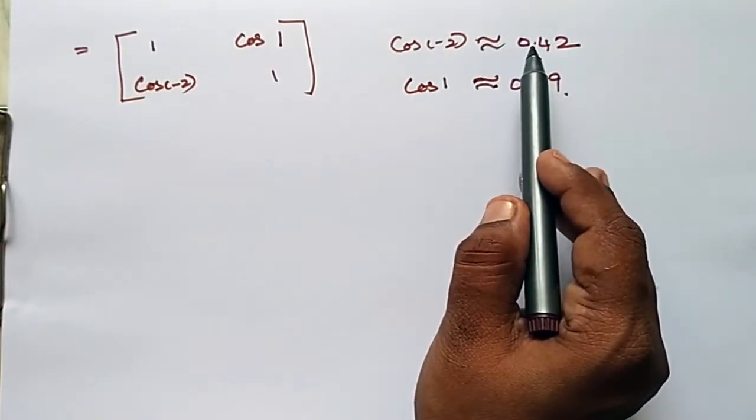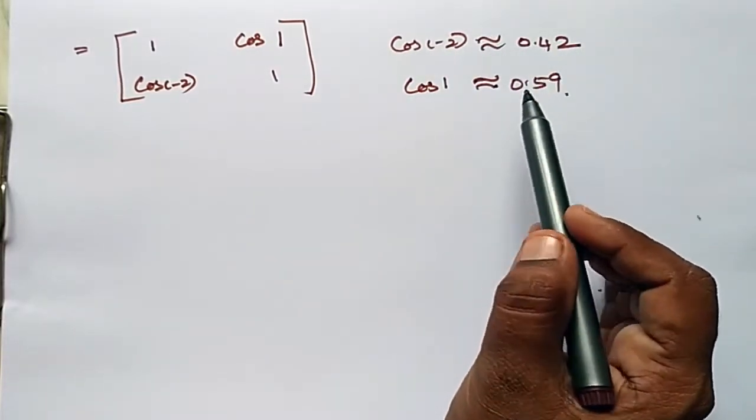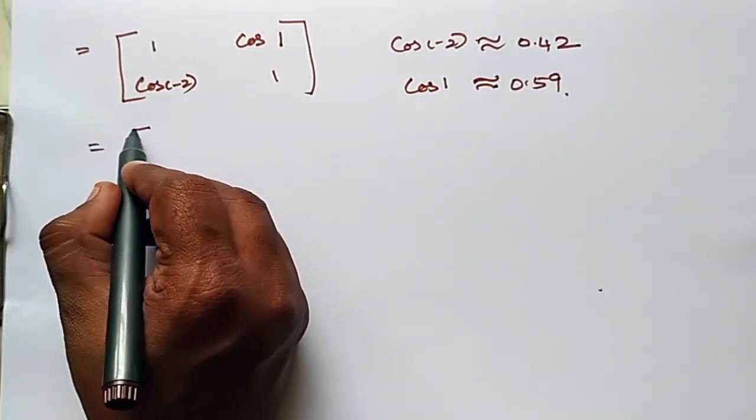Cos(-2) is approximately 0.42. Cos(1) is approximately 0.59.